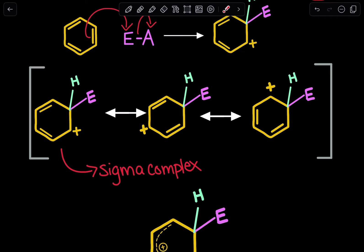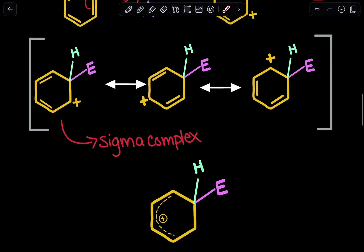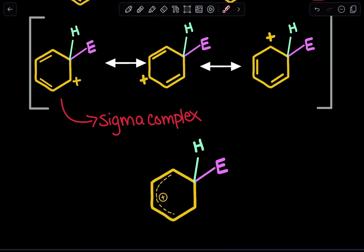When drawing resonance structures, just think about moving electrons towards the positive charge. So towards the positive charge and then towards the positive charge. Here in this case, we'll be going backwards because we are not going in this direction because this carbon already has four bonds.